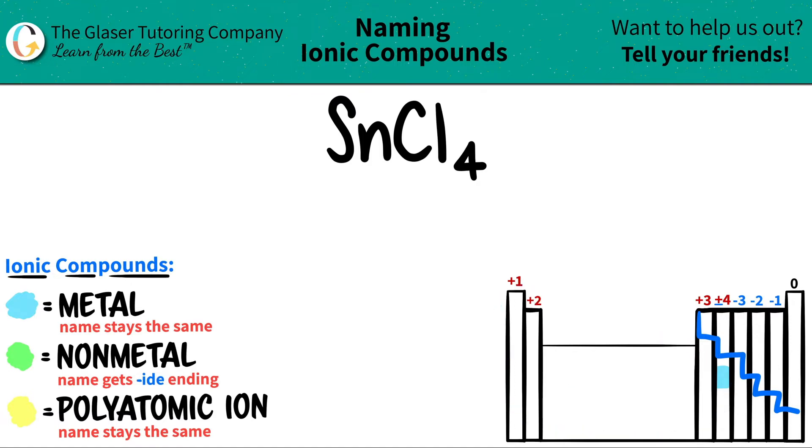excluding hydrogen, and all to the right are nonmetals. So we have tin being a metal and then Cl, chlorine, which is over here on the periodic table. This one is a nonmetal, right? It's in group 7A or 17.